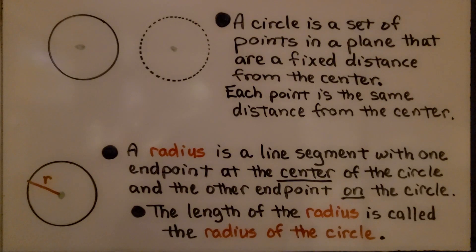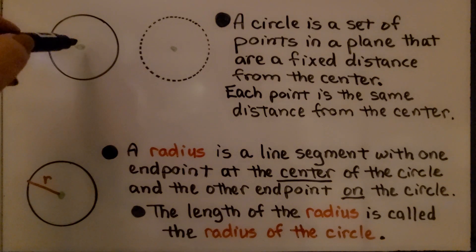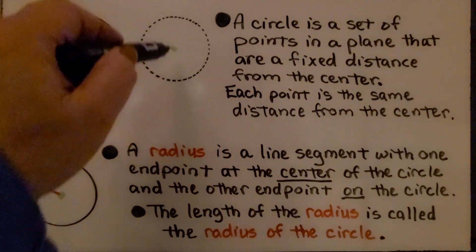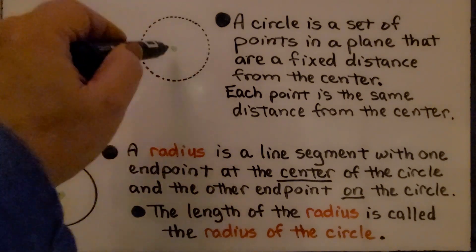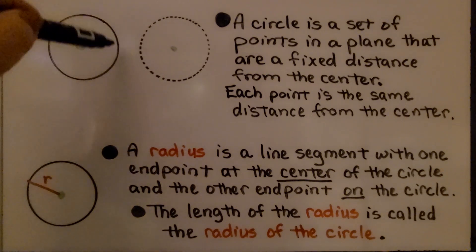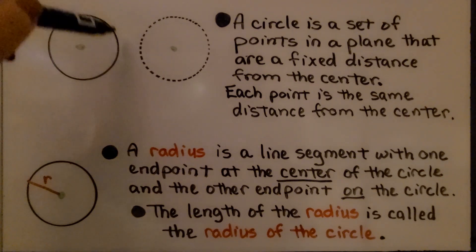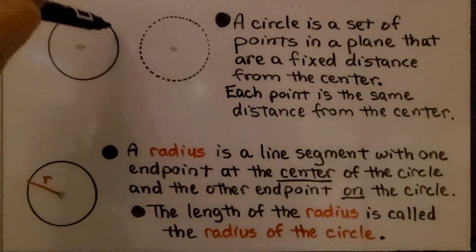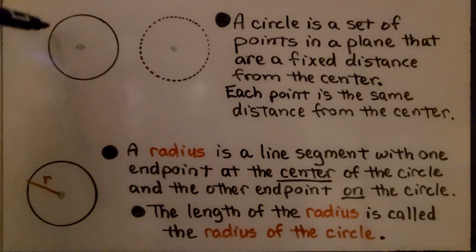A circle is a set of points in a plane that are a fixed distance from the center. Each point is the same distance from the center. So a circle, if you saw a solid line like that, we can actually think of it as so many points that they look blended together.